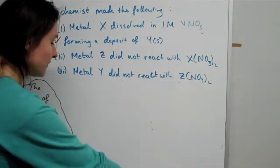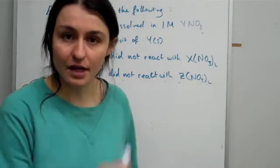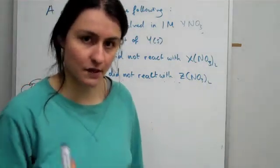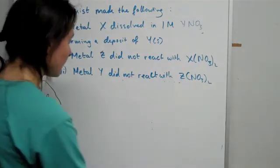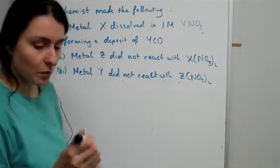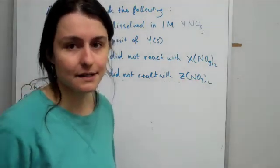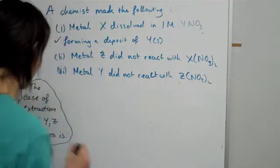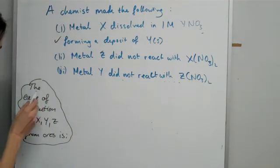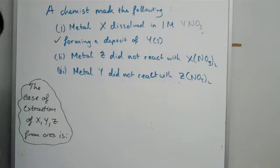So what we have to do here is place these into electrochemical series order, which means we have to figure out what the half equations are. Well, we don't have to, but I just want you to understand what is going on. The question is asking us to find the ease of extraction of metals X, Y, and Z from the ores.